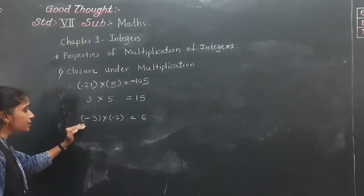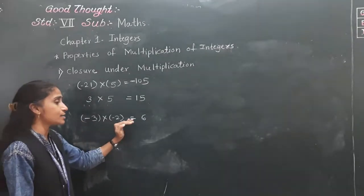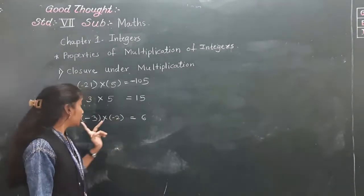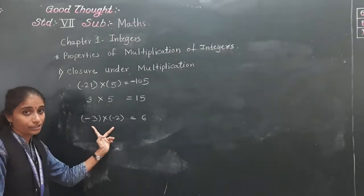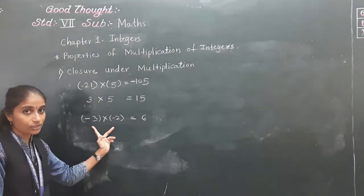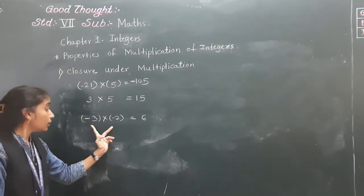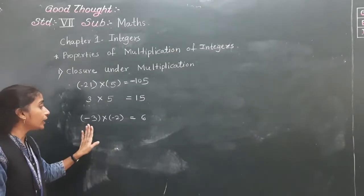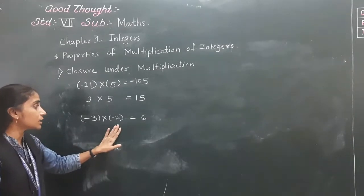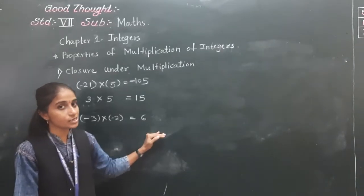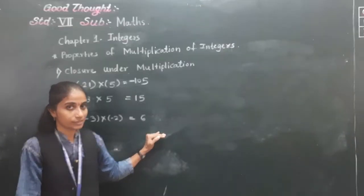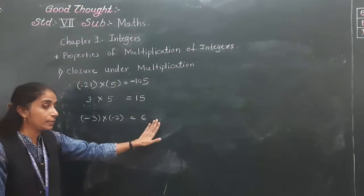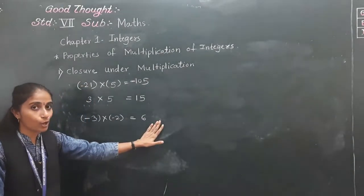Minus 3 into minus 2 — here we have two negative numbers. When two negative integers are multiplied, their product is always positive. So the product is positive, as we learned yesterday.